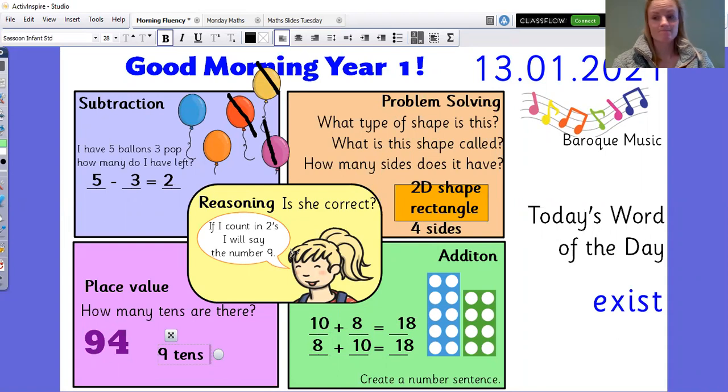Is she correct? Nope, we don't say nine in the twos times table. Nine is an odd number. And in the twos times table, they're all even.